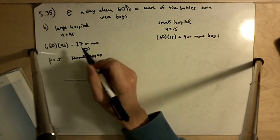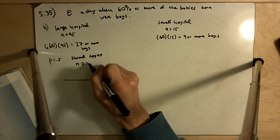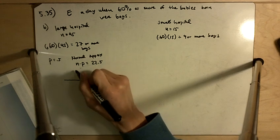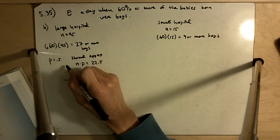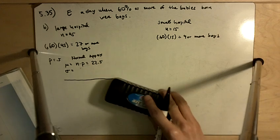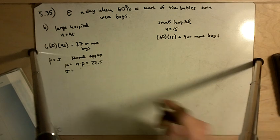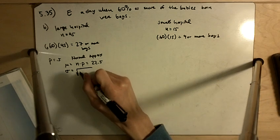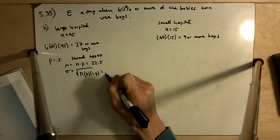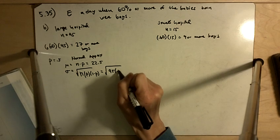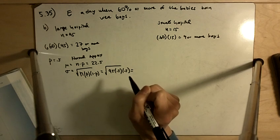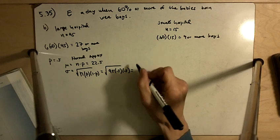For a normal approximation, the number of boys we're expecting is going to be N times P. So basically 22 and a half. And the standard deviation, mean is 22 and a half, and our standard deviation sigma is going to be square root of N times P times 1 minus P. So that's going to be equal to the square root of 45 times 0.5 times 0.5, and that equals 3.354.